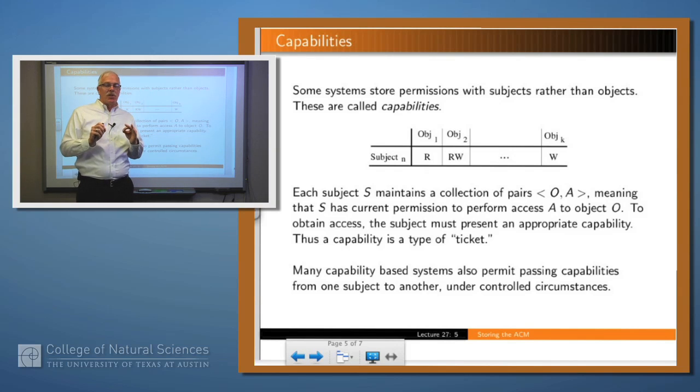Historically, there have been some systems which have tried to take that same information and store it with the subject instead of with the objects. These are called capability-based systems. Effectively, what a capability system does is store with the subject a row of the access control matrix. With a subject, you store a set of pairs: object name and access rights. If that subject wants a particular access to an object, the subject has to present to the operating system one of these pairs, which you can think of as a ticket. The operating system checks to see that the ticket is valid and then grants the access.